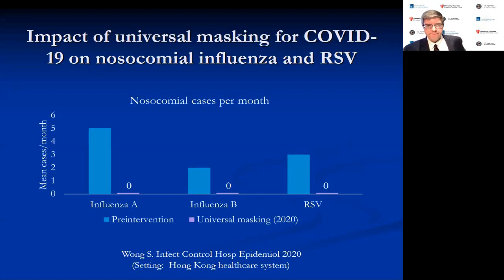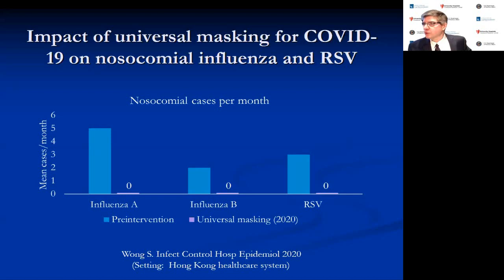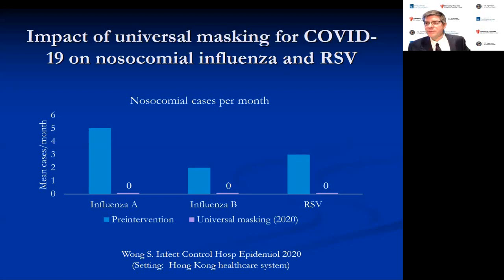A notable silver lining of the pandemic is the dramatic reduction in influenza and other respiratory viruses — confirmed in data from the Southern Hemisphere's flu season. This really suggests that universal masking, eye protection, and social distancing help prevent spread of other viruses as well. We should consider continuing more of these practices even after the pandemic ends to reduce transmission during flu season.